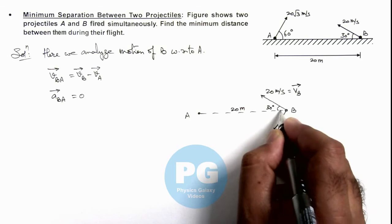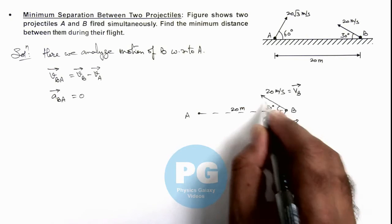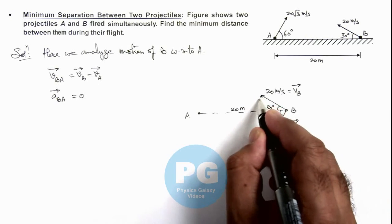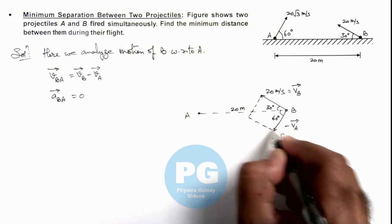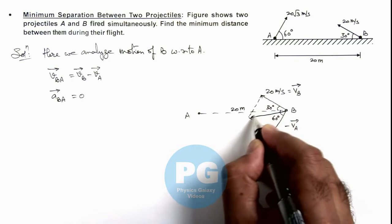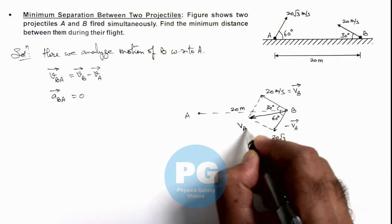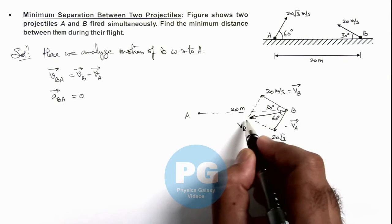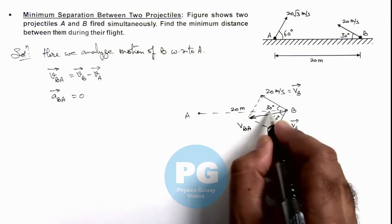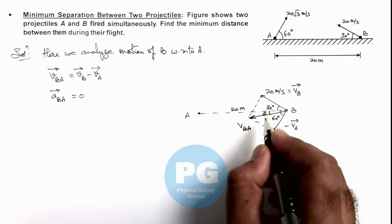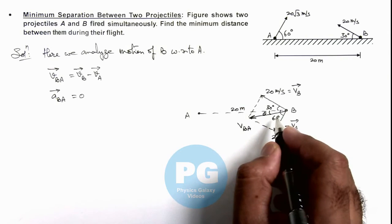And this angle is 60 degrees. As this is a 90 degree angle, we can calculate by parallelogram law of vector addition the velocity of B with respect to A. It is in this direction. Say if this angle is theta, the value of theta we can calculate easily.